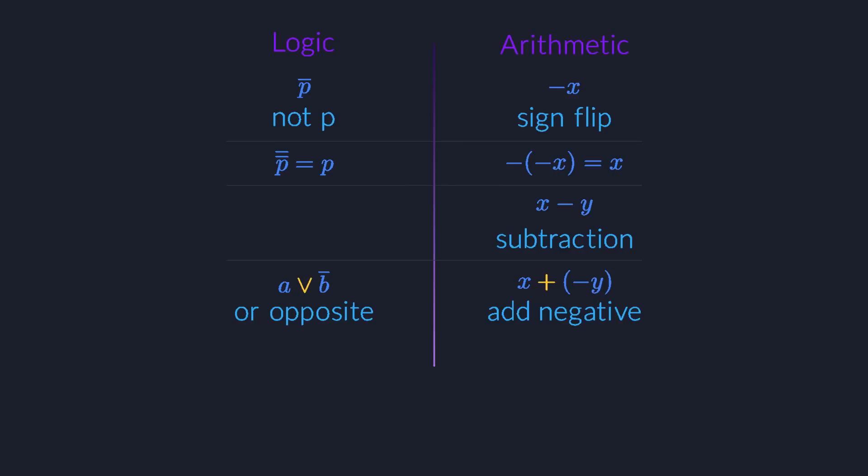And so this expression is the logical equivalent of subtraction, but without the need for parentheses. Logicians even have a shortcut notation for it. They write it with a double arrow, and they read it as if b, then a.